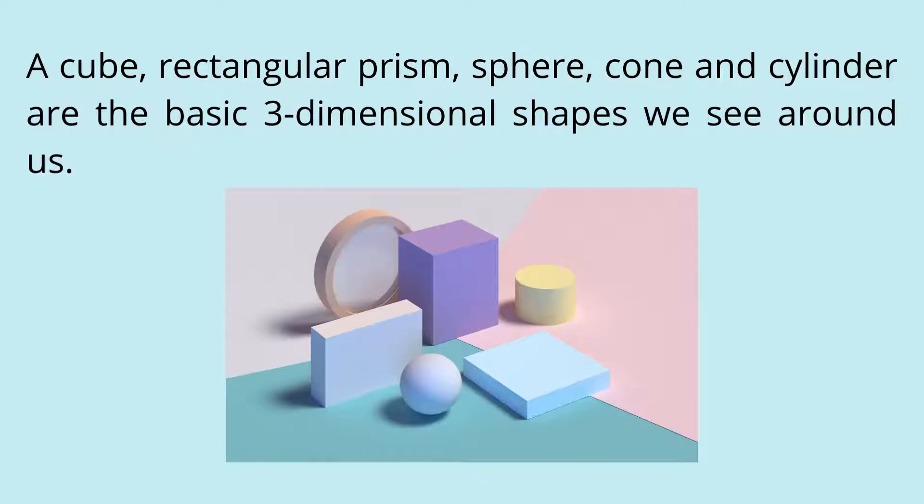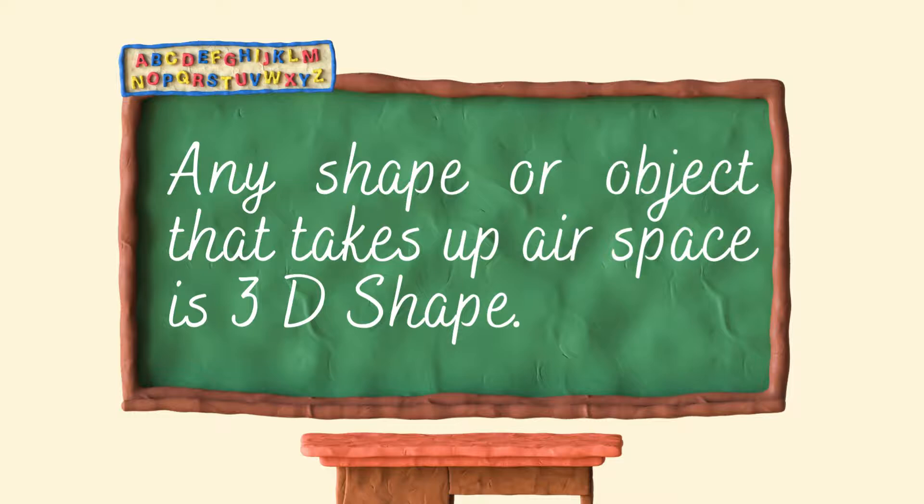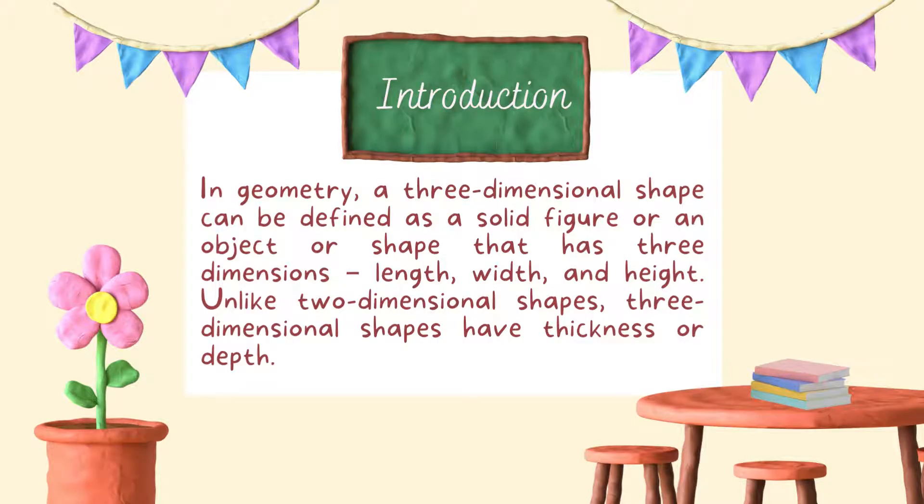In other words, we can say any shape or object that takes up air space is called a 3D shape. In geometry, a three-dimensional shape can be defined as a solid figure or an object that has three dimensions: length, width, and height. Unlike two-dimensional shapes, three-dimensional shapes have thickness or depth.